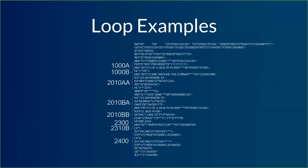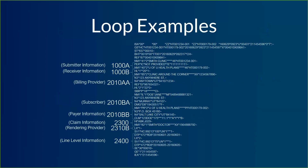The range of numbers goes from about 1000 to about 2440. So if someone says they're looking at loop 2300, I know right away I'm probably looking further than halfway down the claim — closer to three quarters of the way down because it's near the end of the possible range of loop numbers. We can see that we're still going with more general information at the top and more specific information at the bottom. You could call the 2010AA loop the billing provider loop — both are correct.